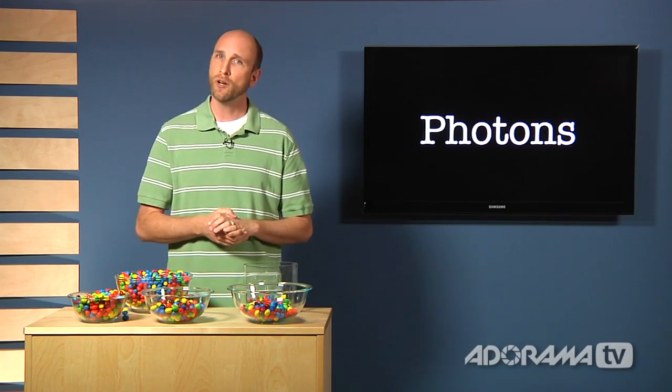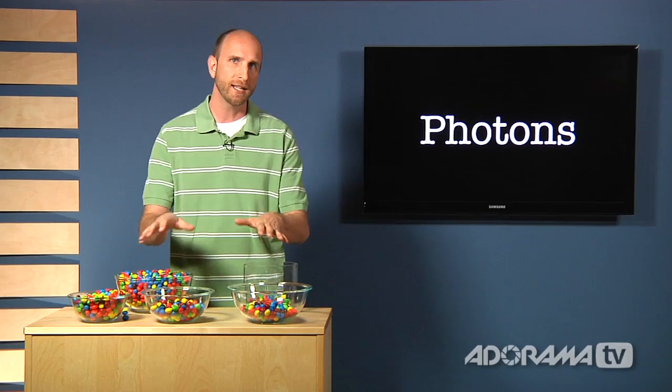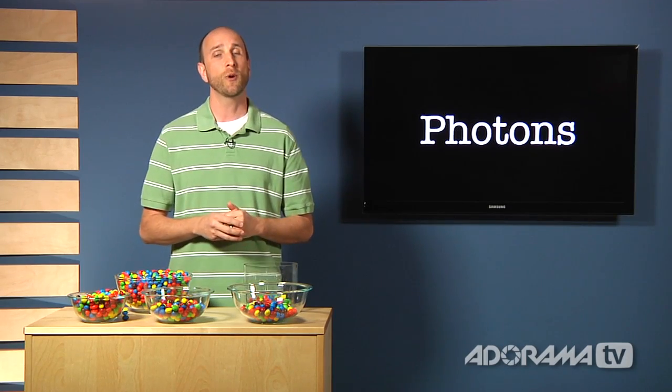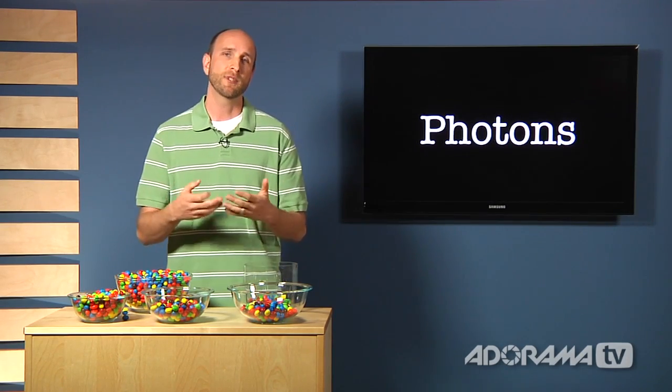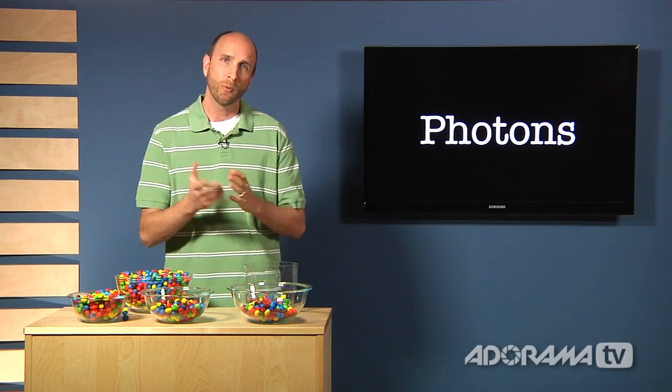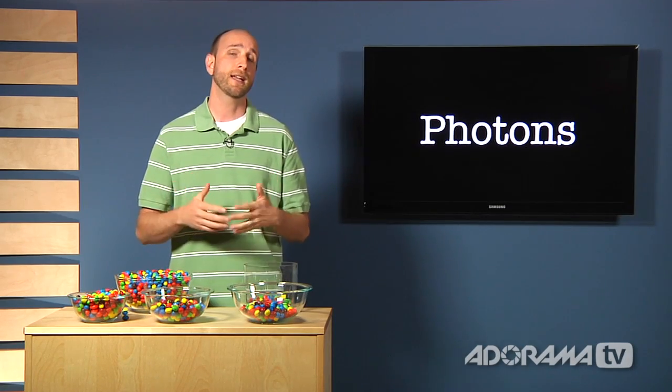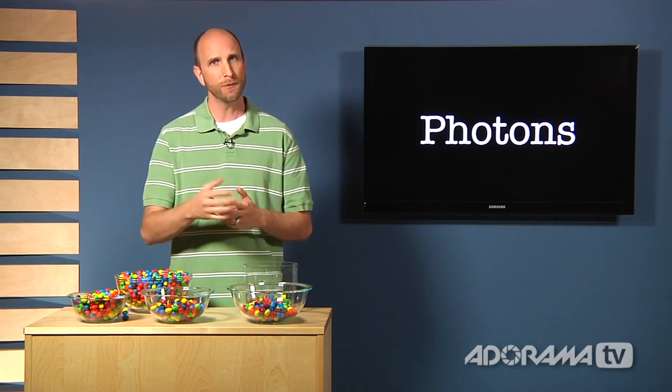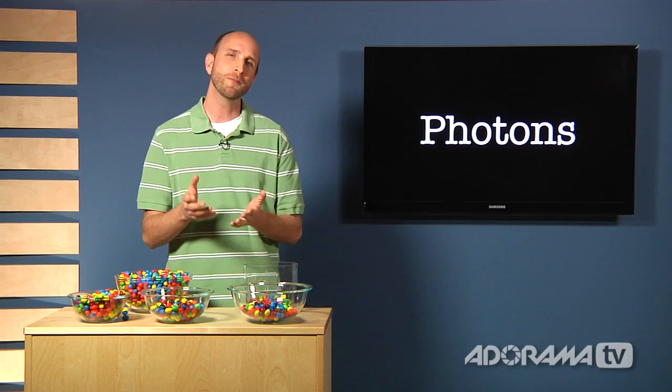Well now that we know more about dynamic range and our photosites, let's quickly talk about some ways that we can manage how our camera sees different levels of light. Well if you want images that have a high dynamic range, you can do a few things. Let's assume that buying a $10,000 camera is out of the picture, so let's talk about some strategies that are a little bit more realistic.